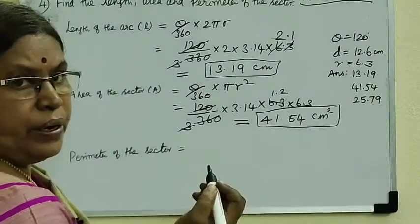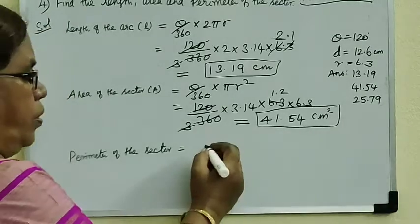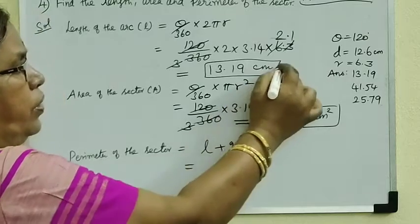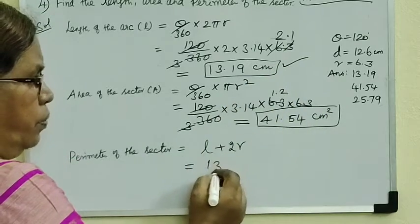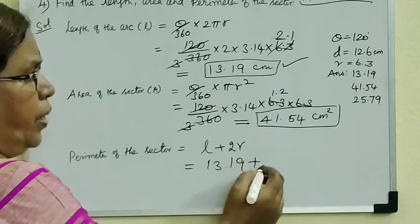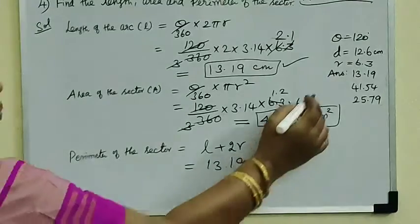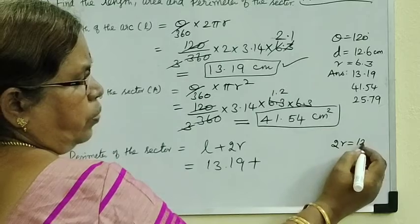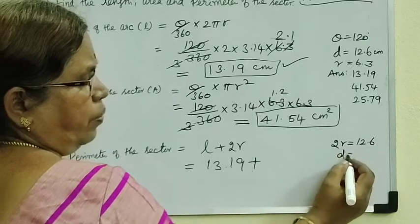Then perimeter of the sector formula: L plus 2R. Perimeter equal to L plus 2R. L is equal to 13.19 plus 2R. 2R is 12.6. 2R is diameter, 2 times of radius is diameter.